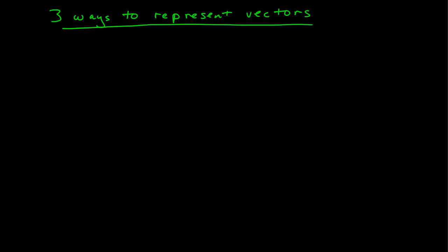In this module, I'm not going to present so much more new information as much as trying to bring together and summarize a number of things that we've learned about vectors. In particular, I want to highlight and link together the three different ways that we have to currently represent vectors. Let's take a specific example.